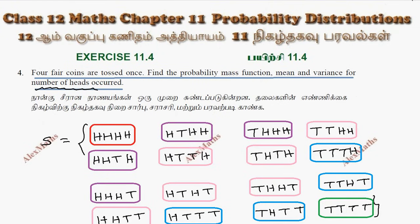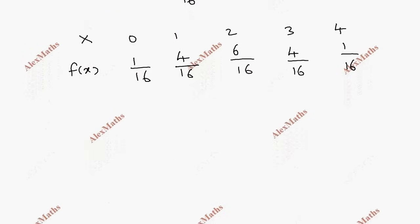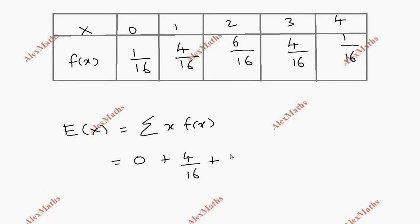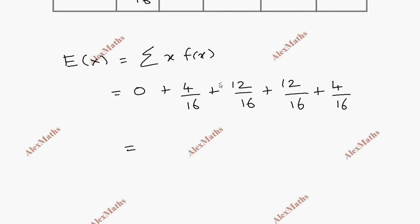Find the probability mass function — complete. Now find the mean E(X). Using the formula E(X) = sigma of x times f(x): 0×(1/16) + 1×(4/16) + 2×(6/16) + 3×(4/16) + 4×(1/16) = 0 + 4/16 + 12/16 + 12/16 + 4/16 = 32/16, which is equal to 2.